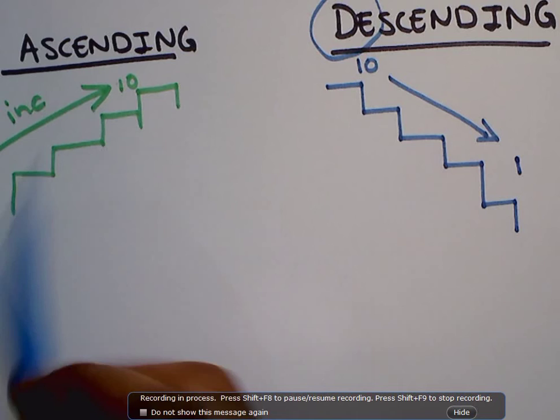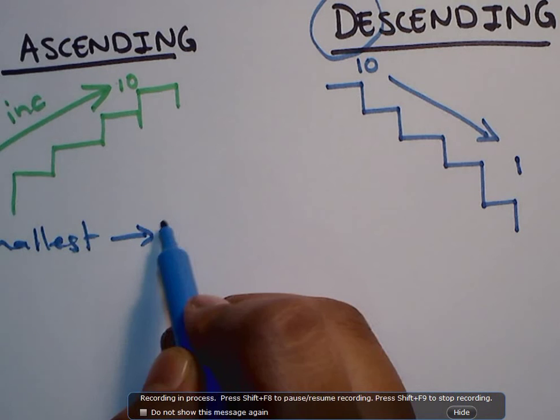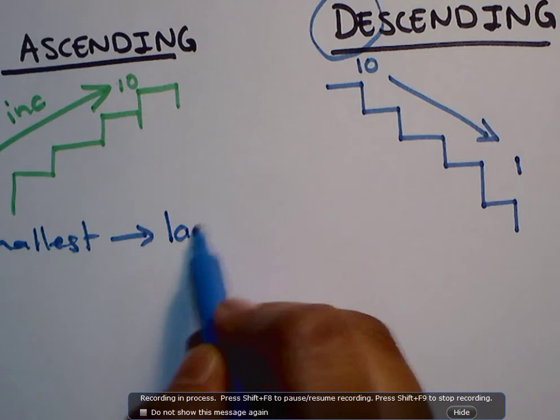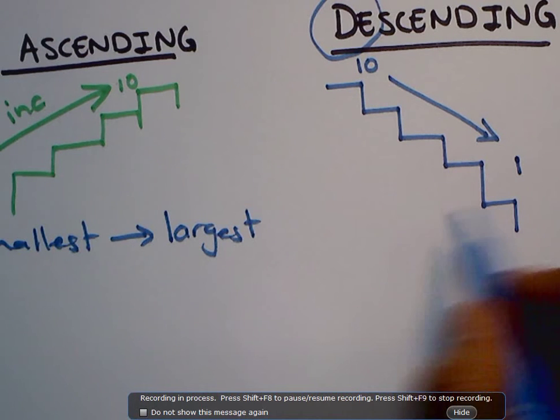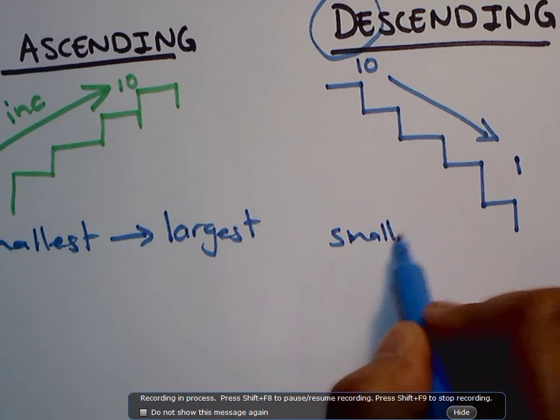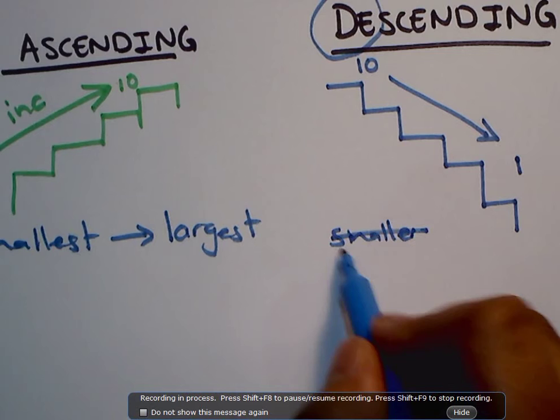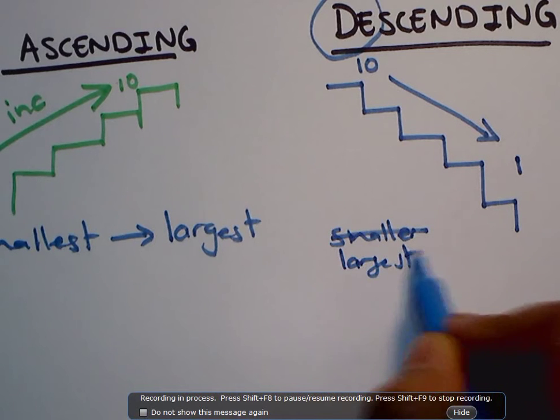Either from the smallest value to the biggest or the highest or the largest, and then you get from the largest to the smallest.